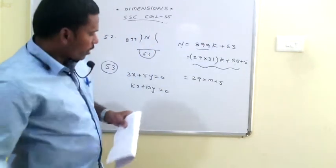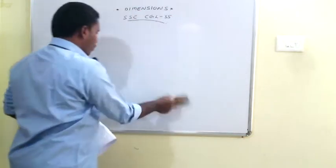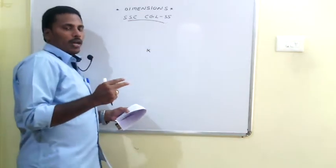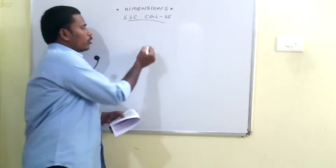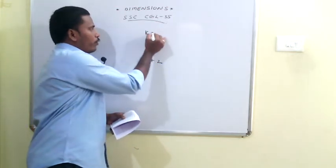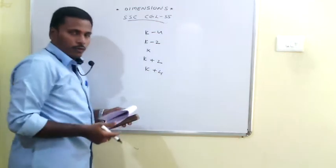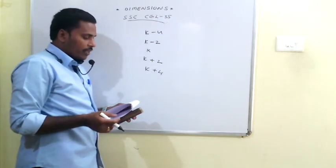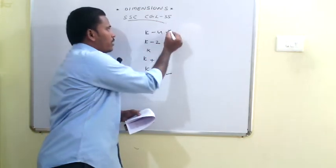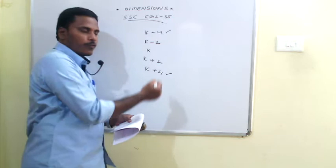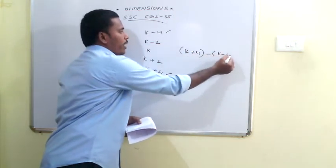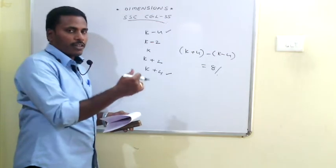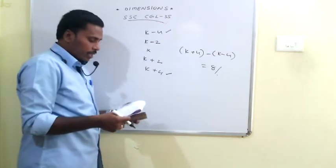The 54th problem: the average of 5 consecutive odd numbers is given as 61. Suppose one number is k; the consecutive odd numbers are k−4, k−2, k, k+2, k+4. They ask for the difference between the highest and the lowest numbers. The highest is k+4 and the lowest is k−4, so the difference is (k+4) − (k−4) = 8. We don't even need to use 61; the answer is 8.